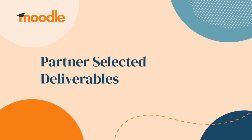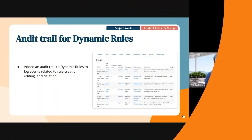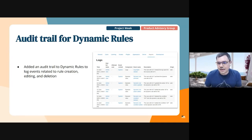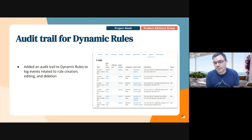Another feature that we have added is an audit trail for Dynamic Groves. All events are now locked in the Dynamic Groves edition. This is something that David worked on as part of his project week, and it was also a request from the product advisory group, which is great.